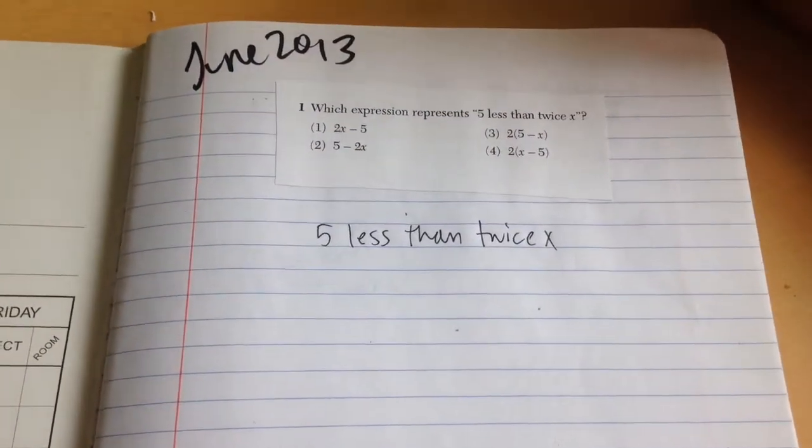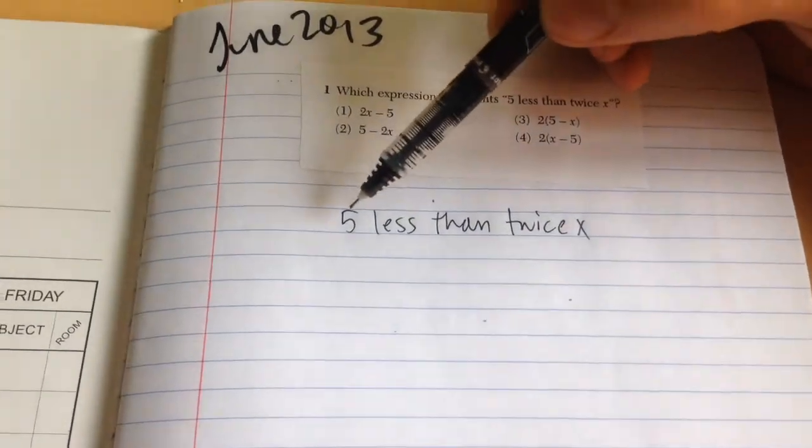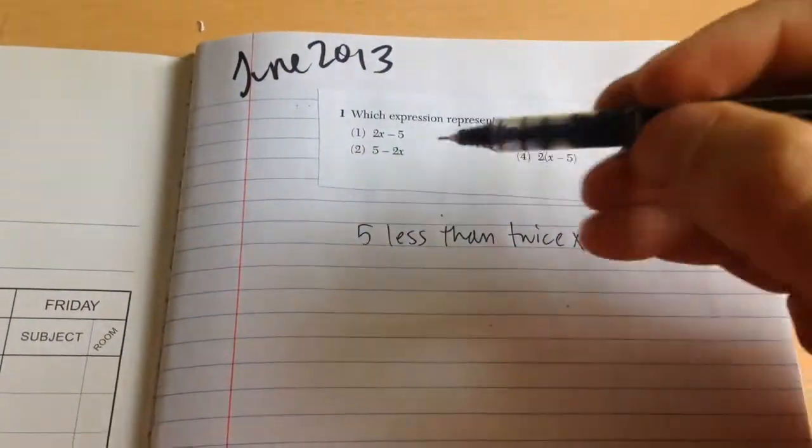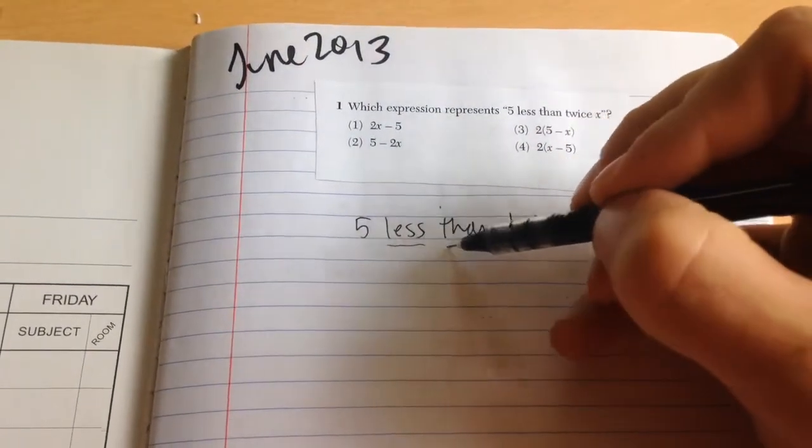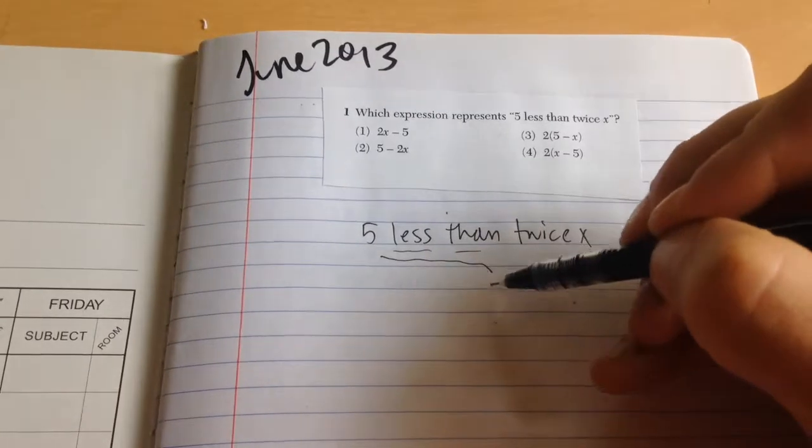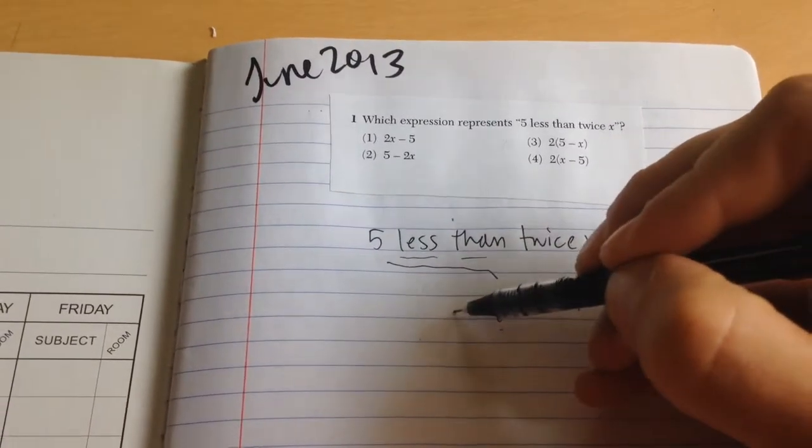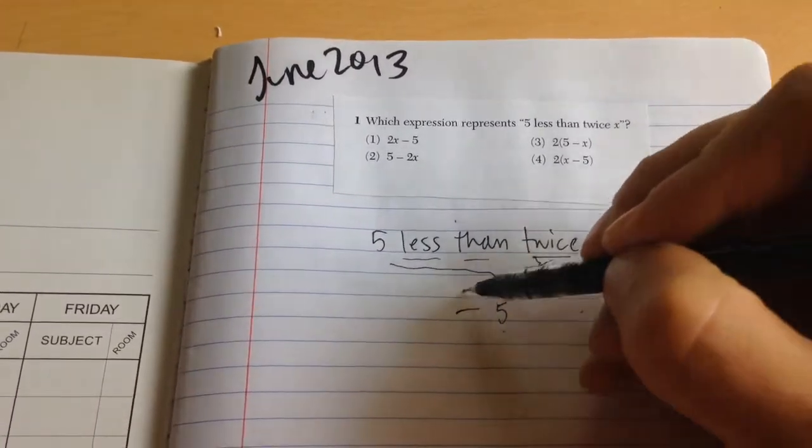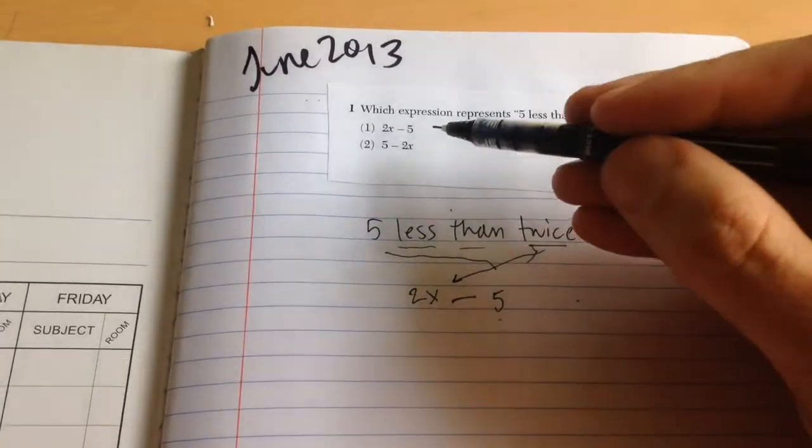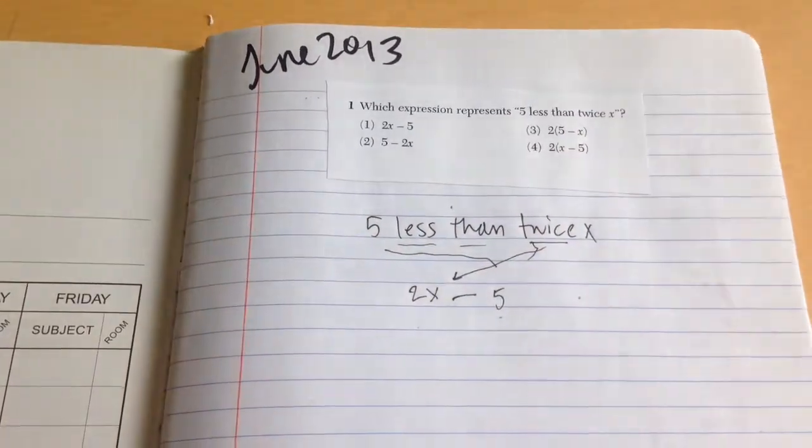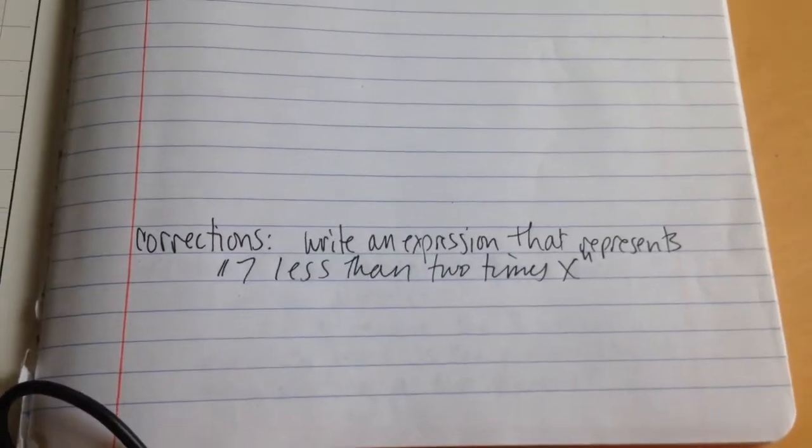Which expression represents 5 less than twice x? Remember, when it says 5 less than twice x, whatever comes first has got to come second. Less than means minus, and this expression is going to go first. 2x minus 5, choice 1. For corrections.